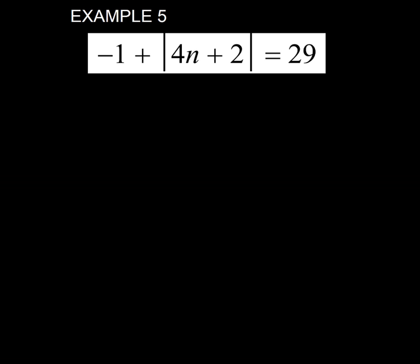In example 5, we see that the absolute value is not by itself. I can tell because if we cover up everything inside the absolute value, there's still this negative 1 hanging outside. So we're going to have to take care of that.